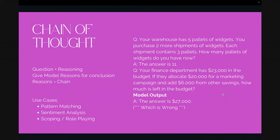Next is chain-of-thought prompting. This is when you need to have reasoning, and it gives you a good example of what I mean by an extra layer over prompting. The model gives reasoning as part of its answer — those reasons are the 'chain.' In this example from the original paper, we give it one example about adding pallets of widgets — each shipment contains three pallets, how many pallets do you have now? Then we ask a finance question: 23,000 in budget, allocate 20,000 for marketing, 6,000 comes from savings — how much is left? The model outputs 27,000, which is wrong.